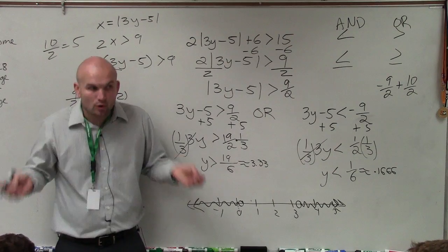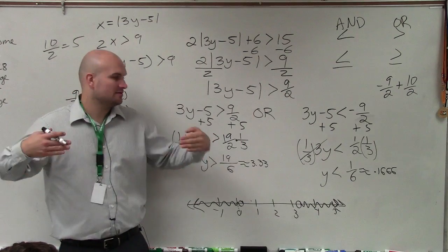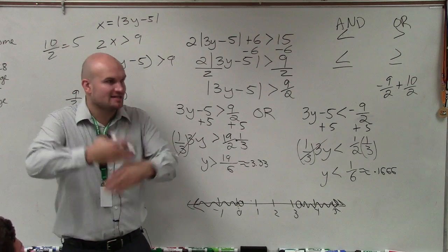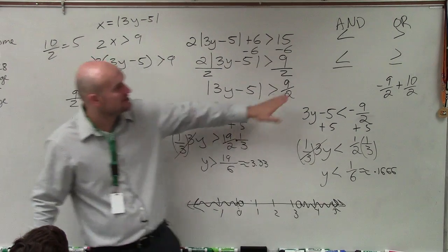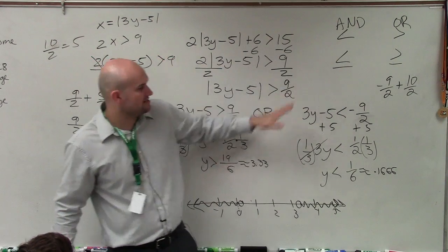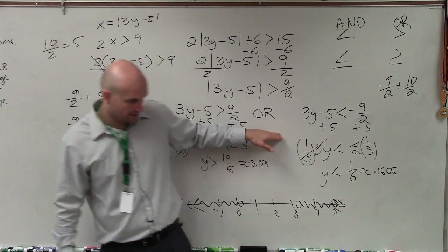Now, what's very important for you guys to understand, if this was an AND, then more than likely, they would cross, and you'd have to define where they intersect. That's where it's important for you guys to understand, what is my original inequality symbol? Which type of compound inequality am I going to graph? Does that make sense?